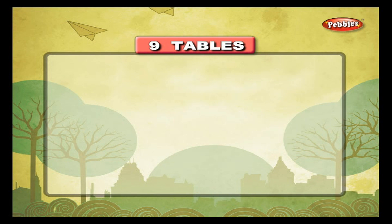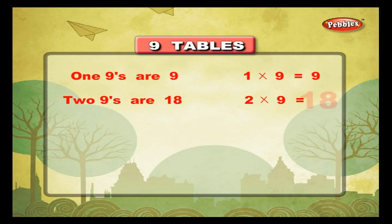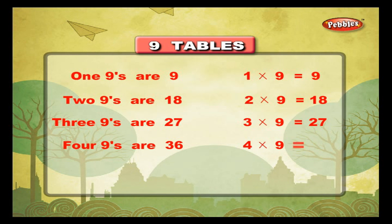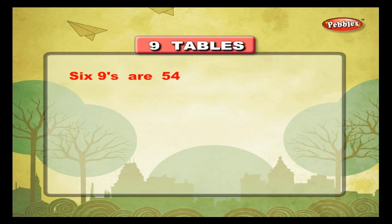9 tables. 1 nine is 9, 1 into 9 is equal to 9. 2 nines are 18, 2 into 9 is equal to 18. 3 nines are 27, 3 into 9 is equal to 27. 4 nines are 36, 4 into 9 is equal to 36. 5 nines are 45, 5 into 9 is equal to 45.